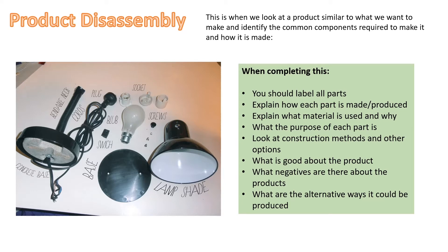When completing a product disassembly, you should label all the parts and explain how each part is made or produced — for example, vacuum forming, laser cutter, or injection molding. You need to explain what material is used and why that particular material is used, the purpose of each part, construction methods and other options, what is good about the product, what negatives there are, and alternative ways it could be produced.